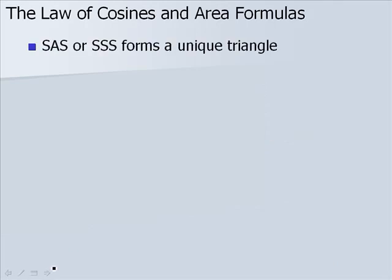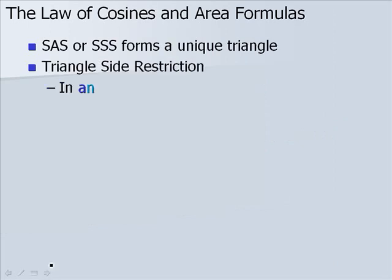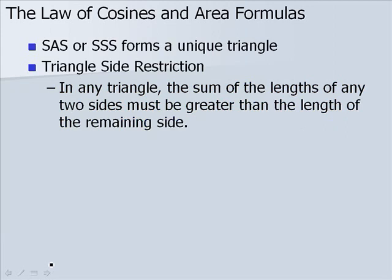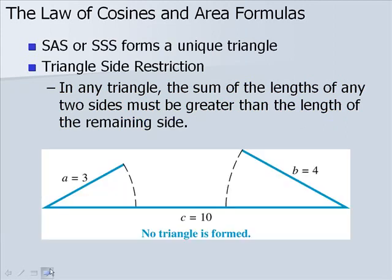Given side-angle-side or side-side-side, we form a unique triangle. There is a triangle-side restriction, however. In any triangle, the sum of the lengths of any two sides must be greater than the length of the remaining side, or no triangle is formed, as we see here.